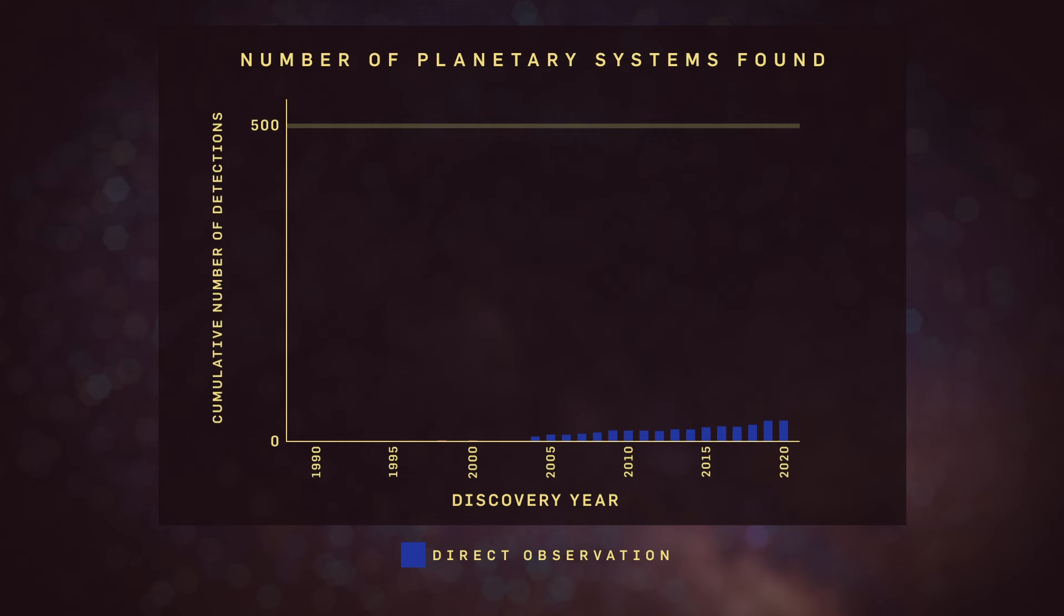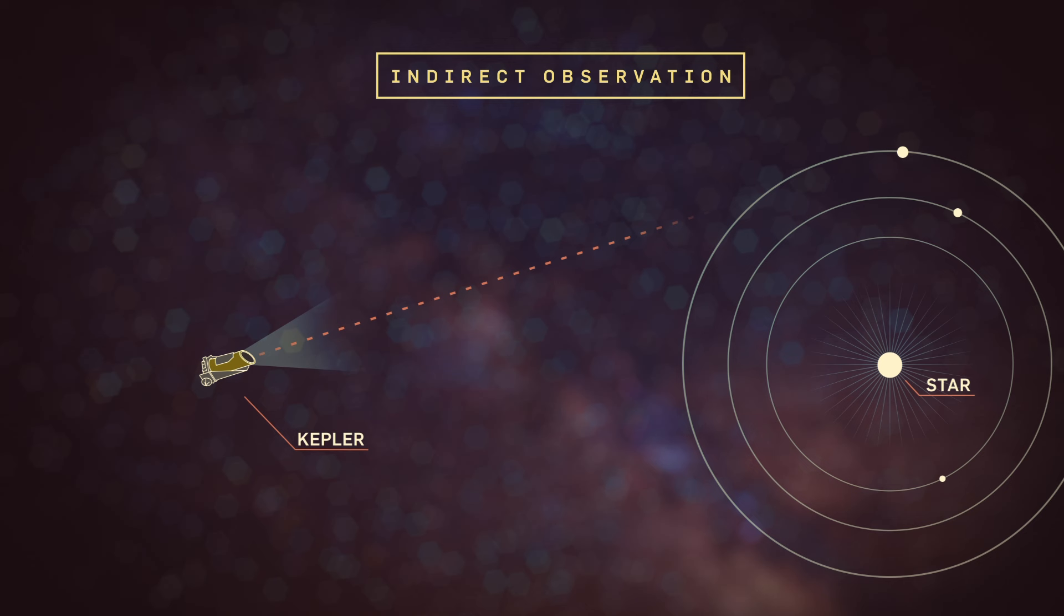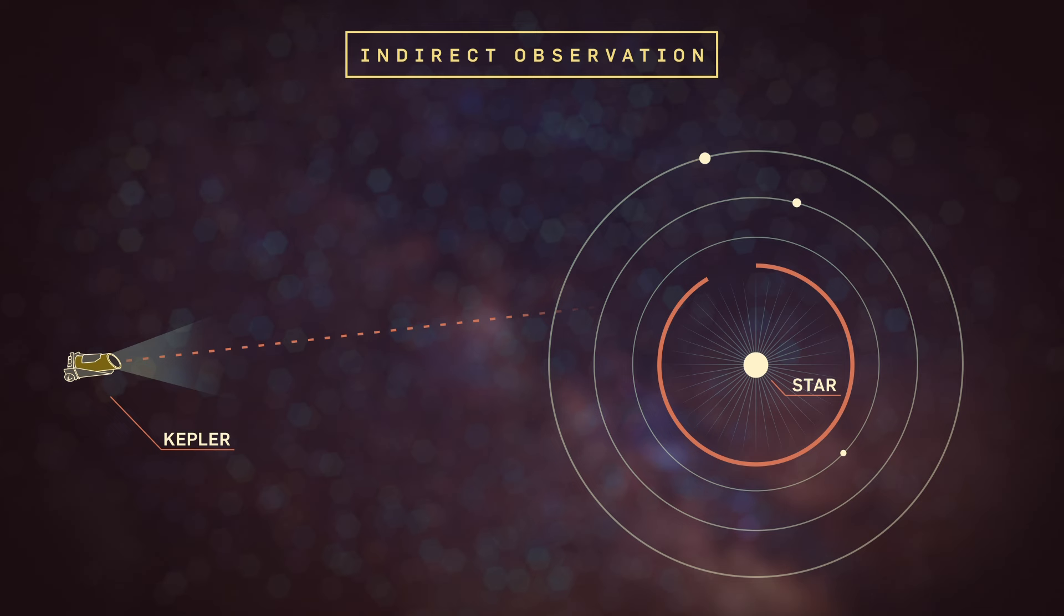There's really only a handful of planets that we found by directly observing their light. It's just too hard to do with current technology, so we have to be more clever. We have to find indirect ways of finding them. And those methods basically rely around looking at the light that we get from the star rather than the planet.